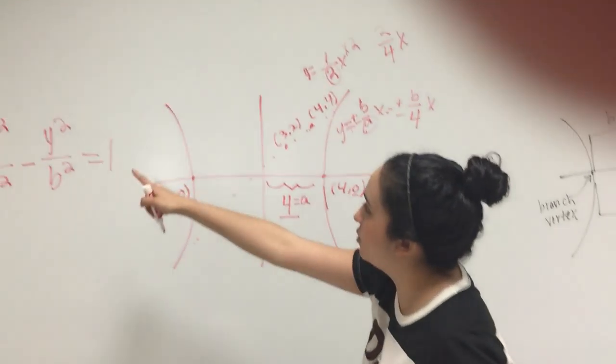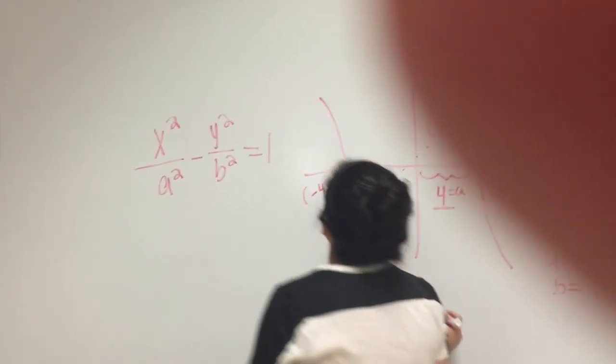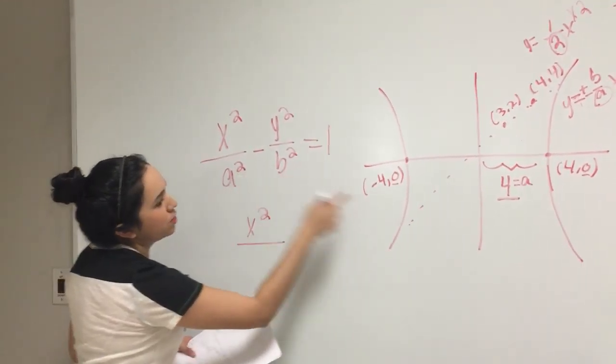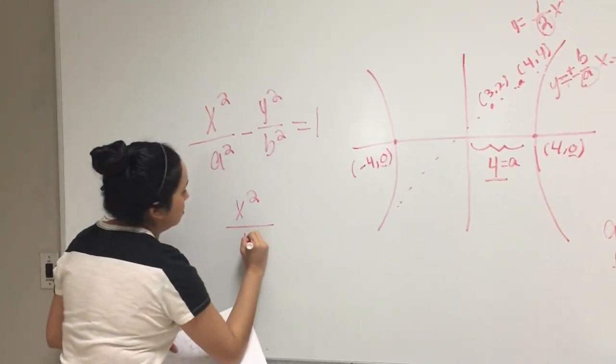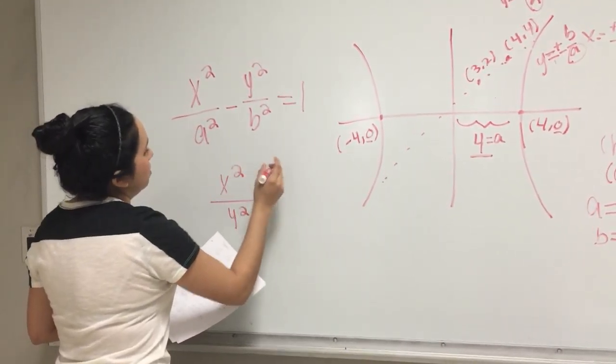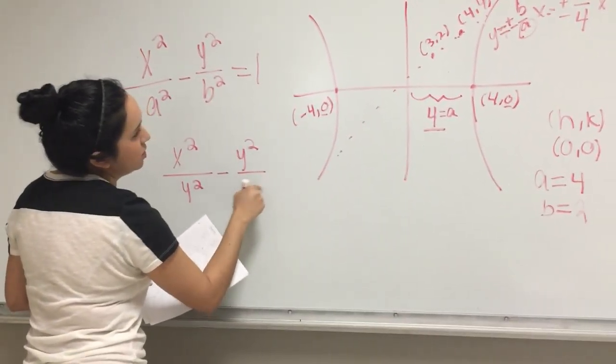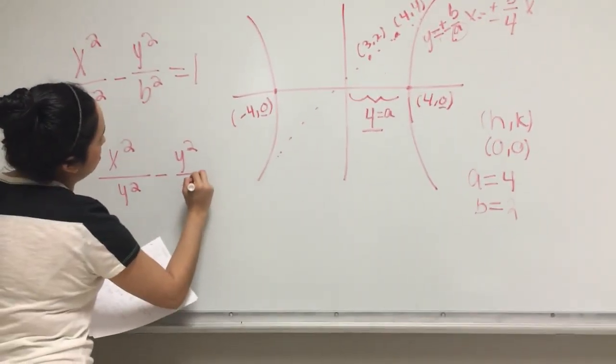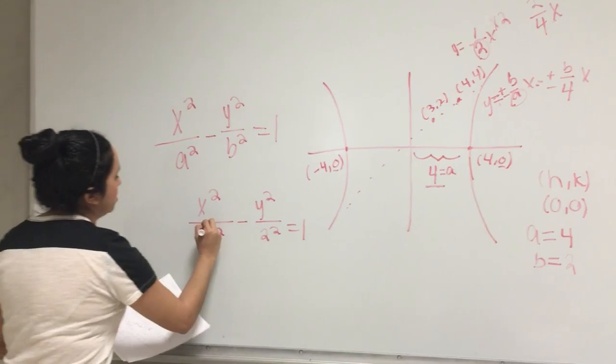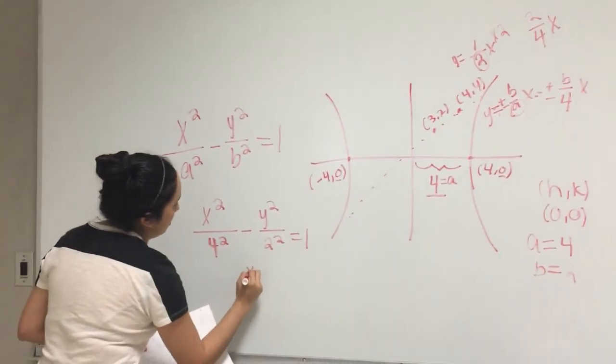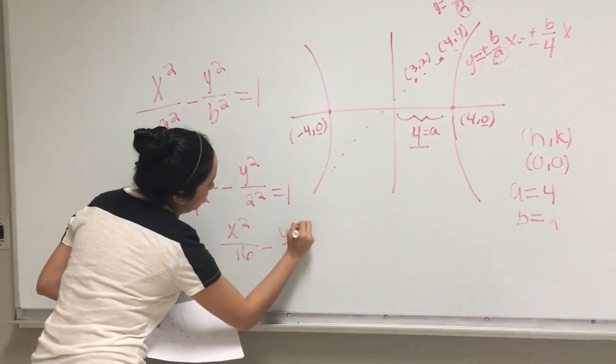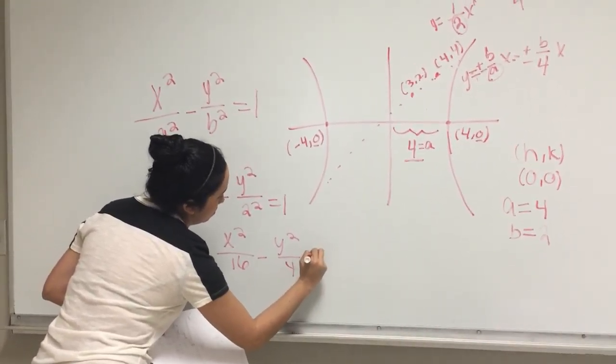Now we're plugging everything into our original equation. So we have x squared over a squared, or A is 4, A squared minus y squared over b squared, or B is 2, equals 1. So we can just solve for this. We have x squared over 16 minus y squared over 4 equals 1, and this would be our equation for this type of hyperbola.